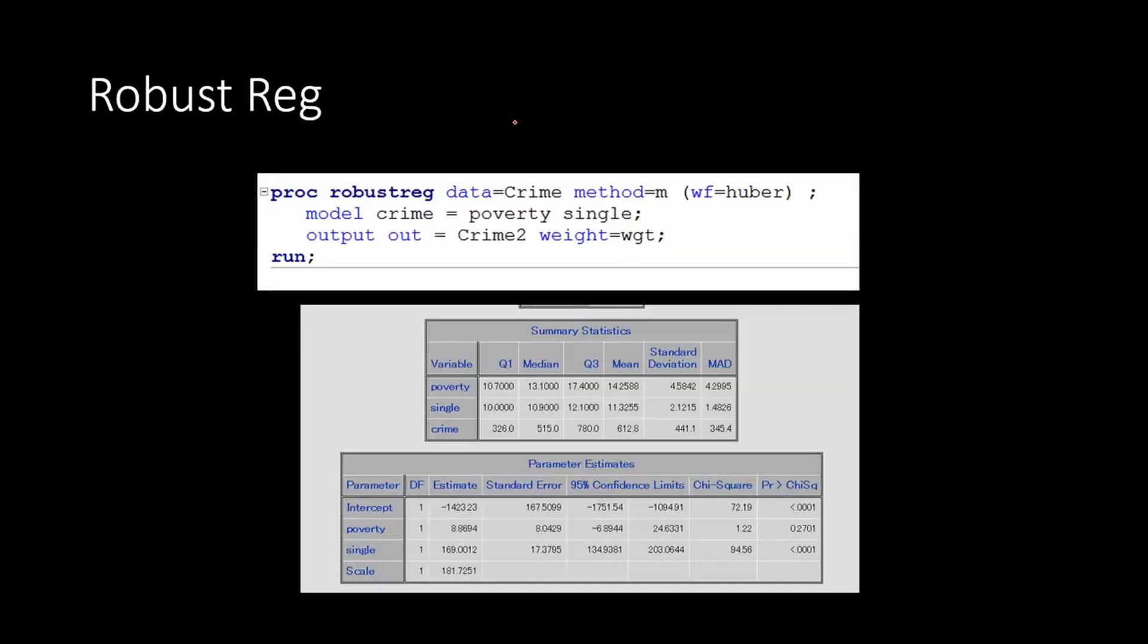So we'll use robust regression. And we'll use PROC ROBUSTREG in SAS to do the estimation. So when we run this, we will get this output. We have the parameter estimates. Here also we can see that just one variable is significant. Yes, only single is significant, poverty is not.